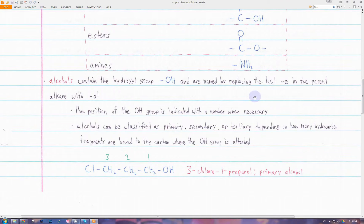For example, methane becomes methanol and ethane becomes ethanol. We have to specify the position of this OH group with a number, just like how we represent the position of any substituent group. Alcohols can be classified as primary, secondary, or tertiary.